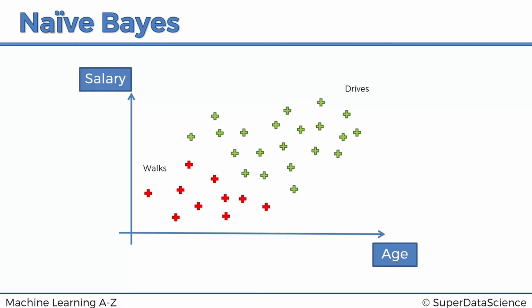Now we get to our problem — the machine learning challenge we're going to solve. What happens if we add a new observation, a new data point into this set? How do we classify this new data point? This is a supervised machine learning algorithm because we're classifying something based on previously known classes. The question is: is this person going to be classified as someone who walks to work, or someone who drives to work? The Naive Bayes algorithm is going to help us solve this challenge.